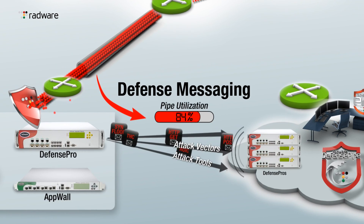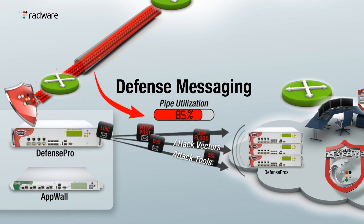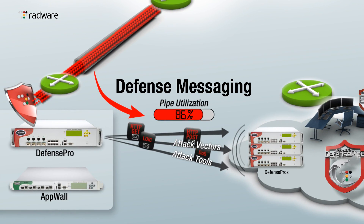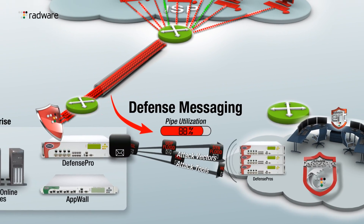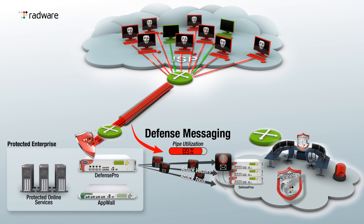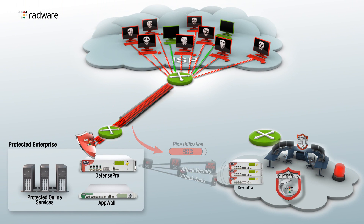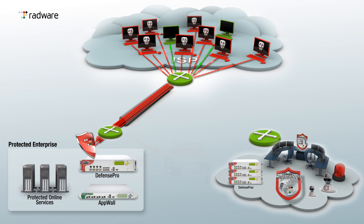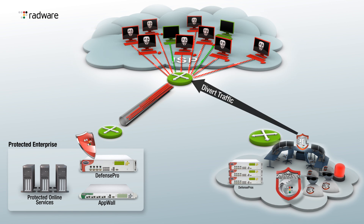If the pipe utilization is increasing and it threatens to saturate the internet pipe, the on-premise AMS sends a defense messaging alert to the Defense Pipe Scrubbing Center that is monitored by security specialists 24-7. This alert invokes the ERT that contacts the customer in order to divert the traffic to the Defense Pipe Scrubbing Center.